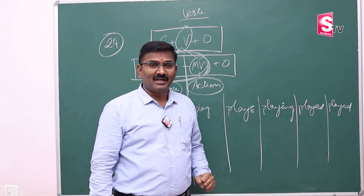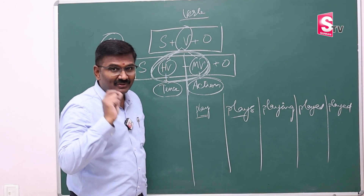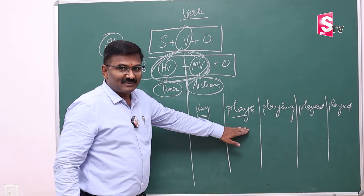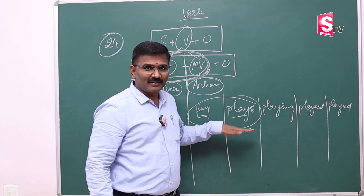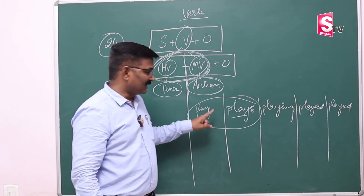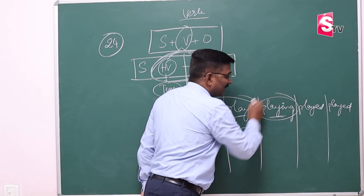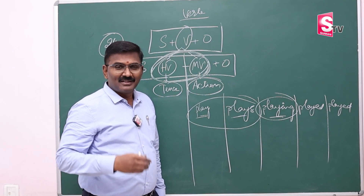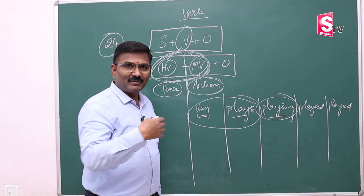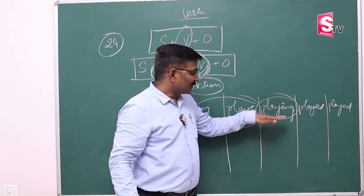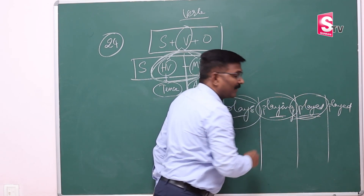The first form is called the base form. The second is the base form for singulars. We use these base forms to express regular activities in English. Then there is the 'ing' form of the verb, used to say continuous actions in English. There are different kinds of continuous actions: present continuous, past continuous, future continuous, present perfect continuous, past perfect continuous, and future perfect continuous.